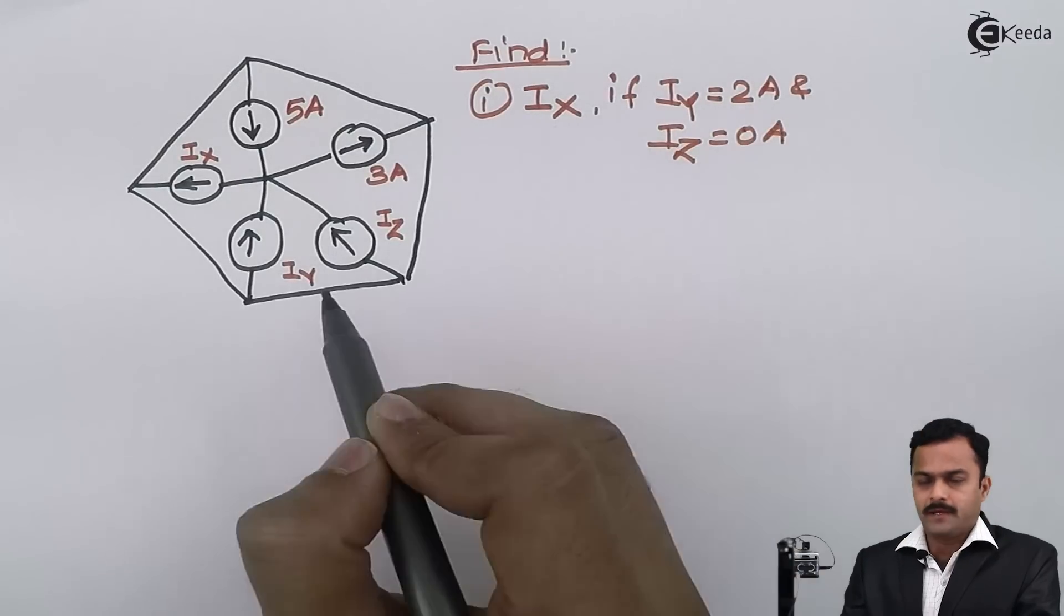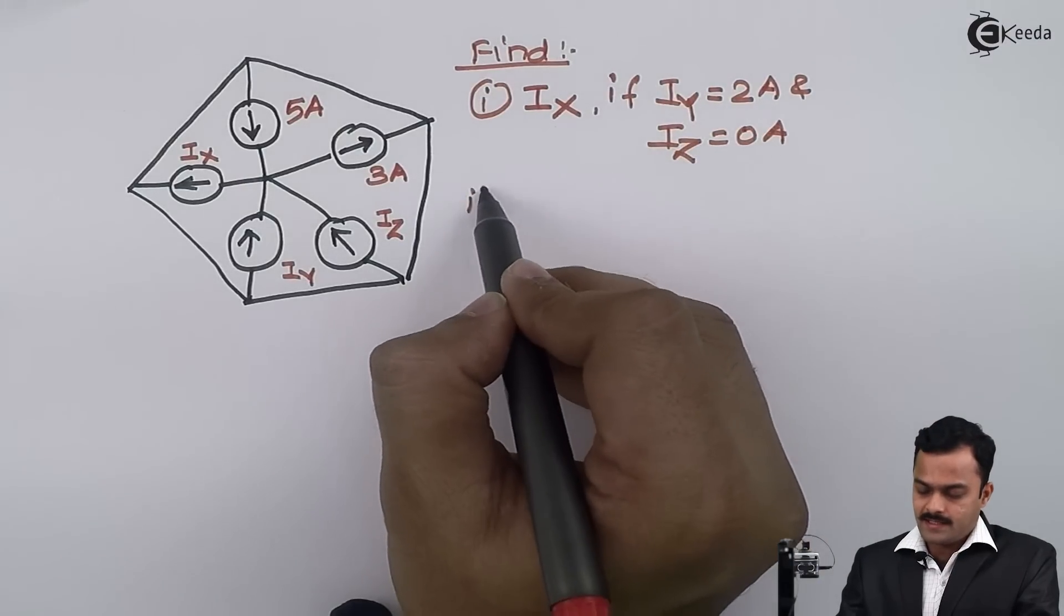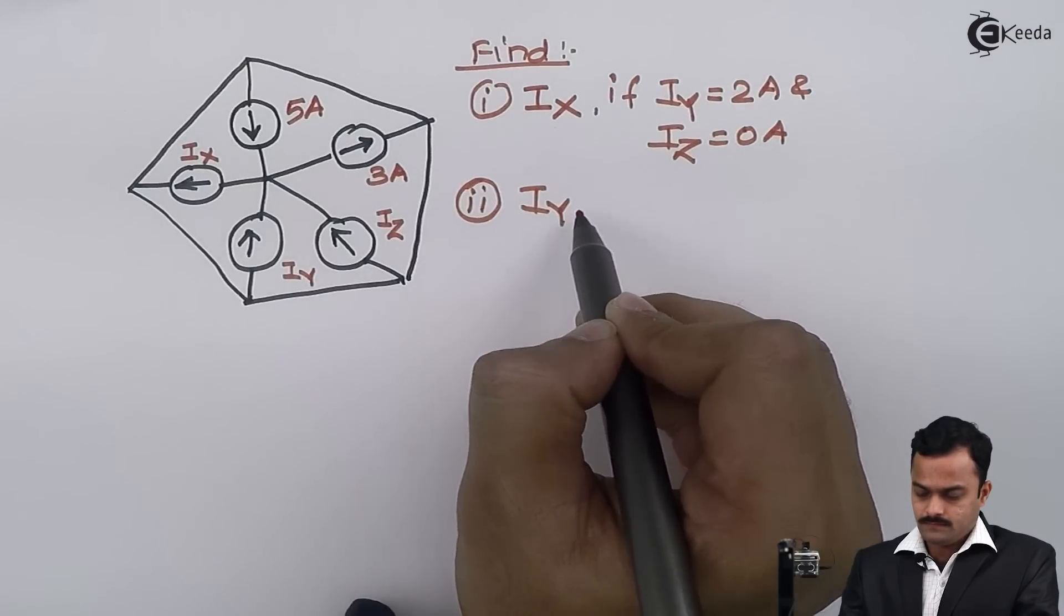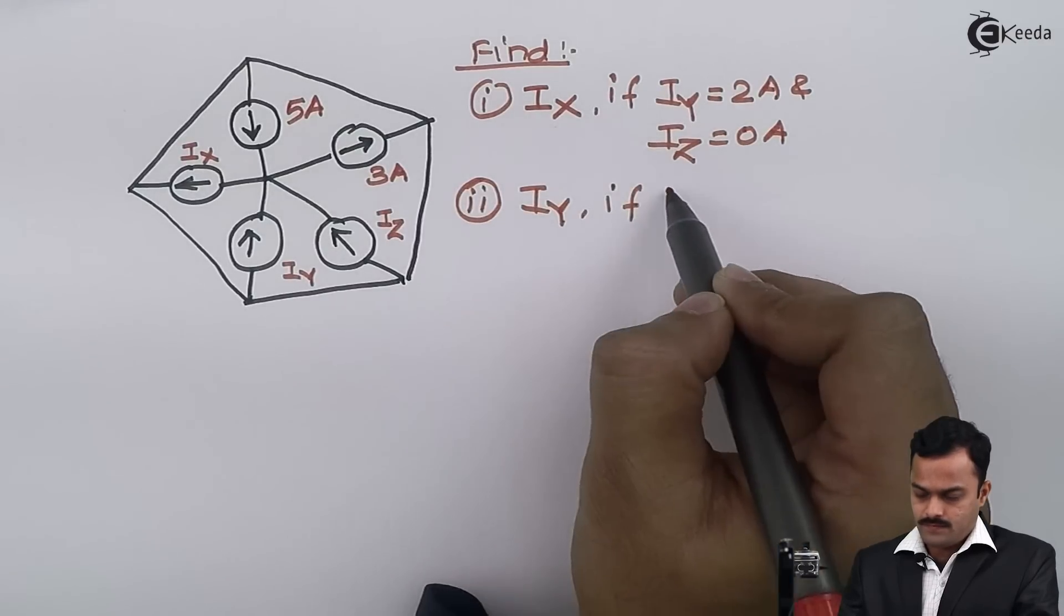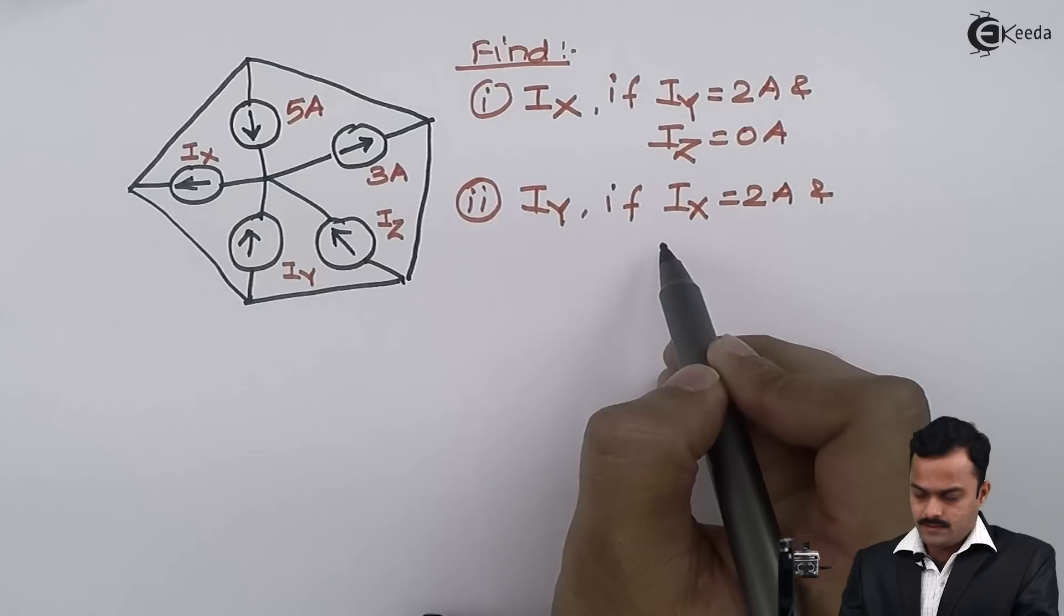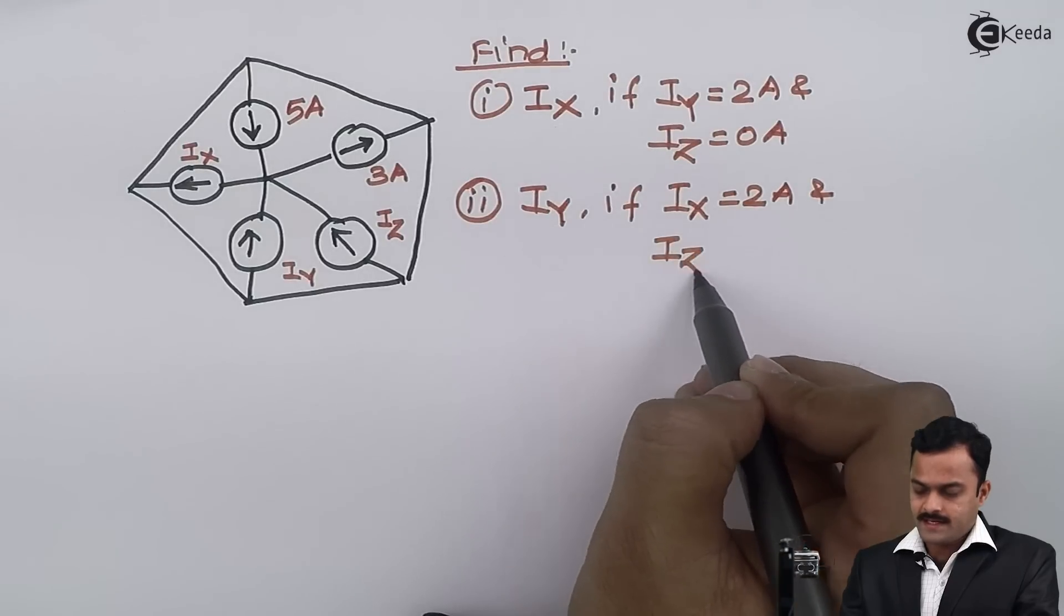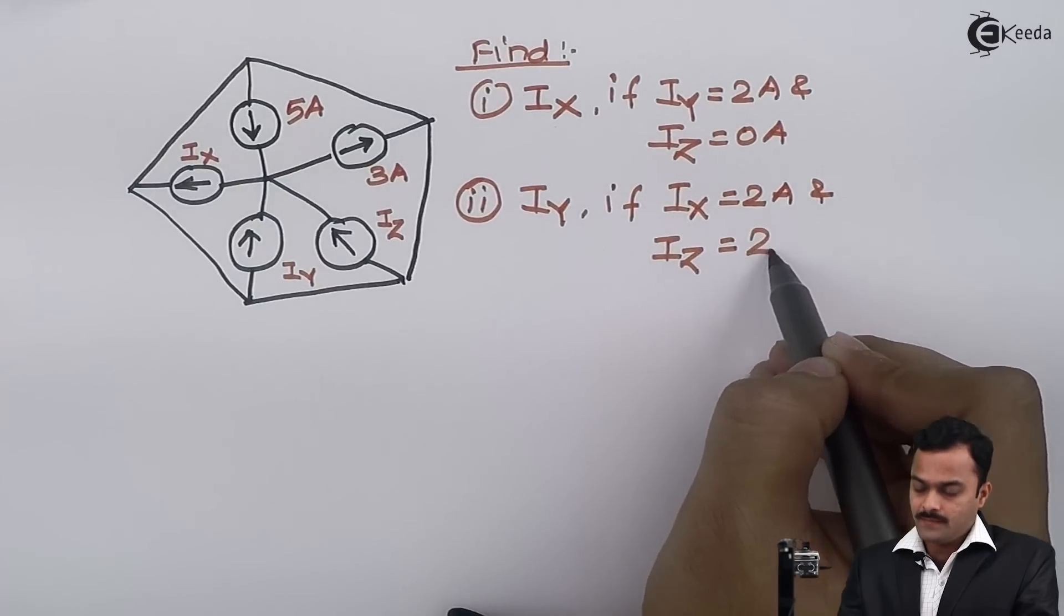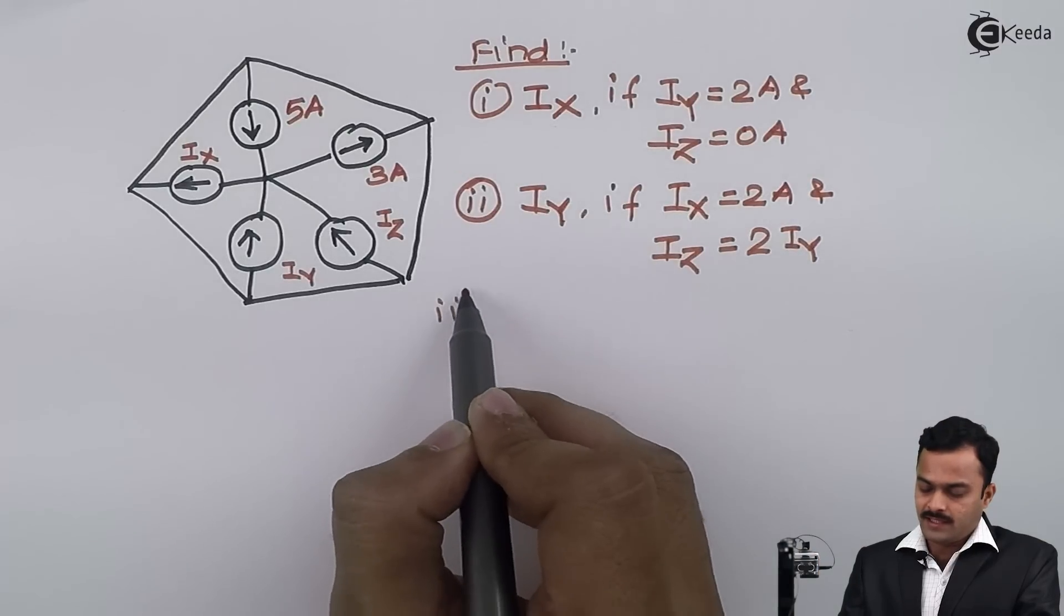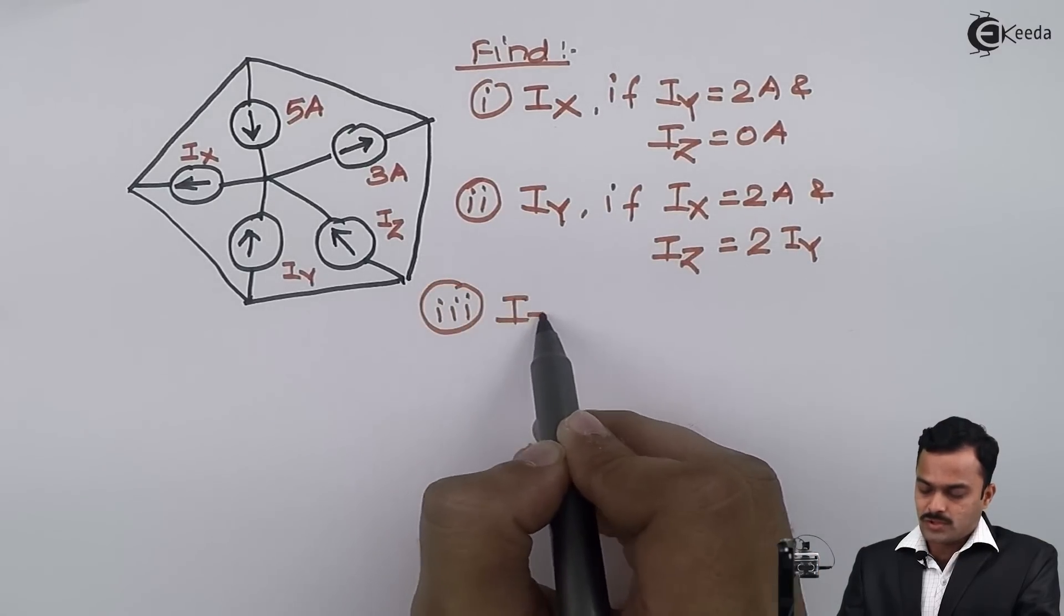Then in second case, we have to find out iy if ix equals 2 ampere and iz equals two times iy.